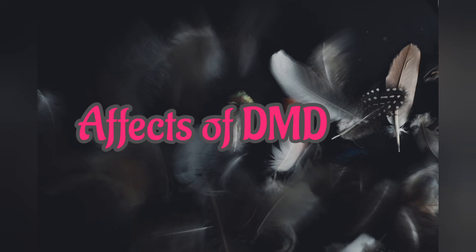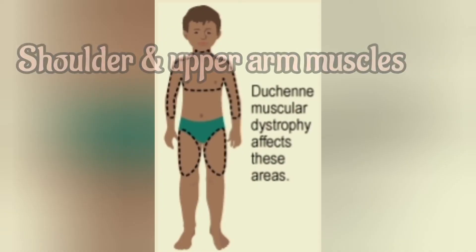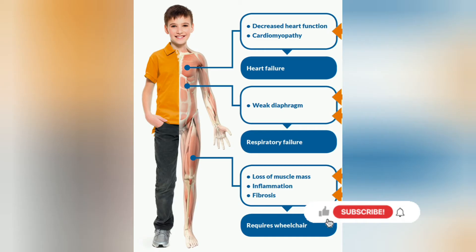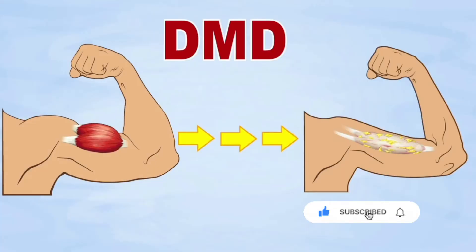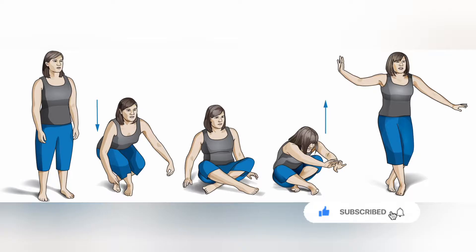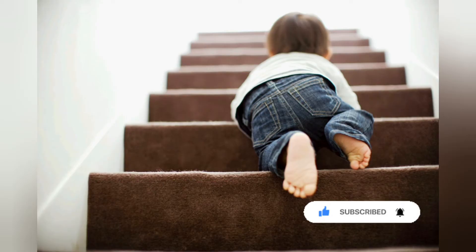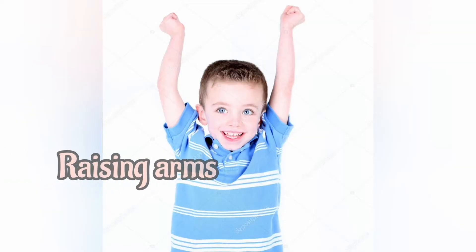Let's see the effects of DMD. DMD affects the shoulder and upper arm muscles and the muscles of the hip and the thighs. These weaknesses lead to difficulty in rising from the floor, climbing stairs, maintaining balance, and raising the arms.